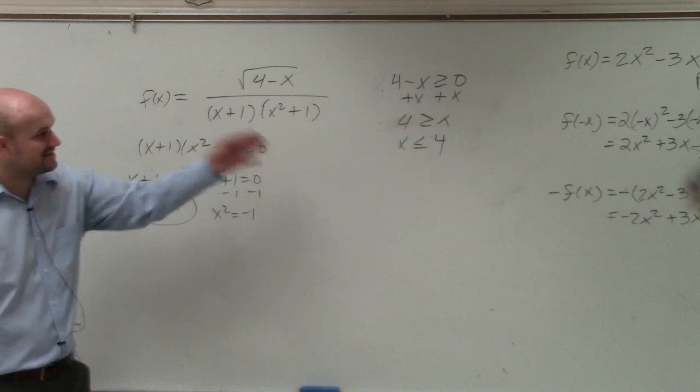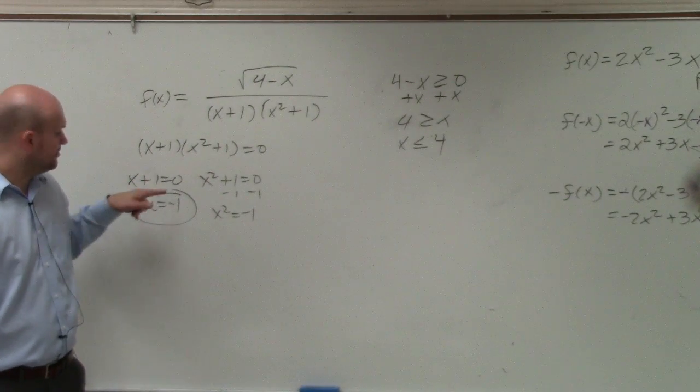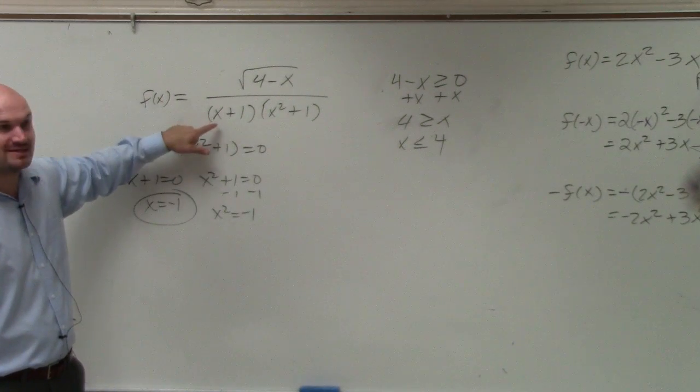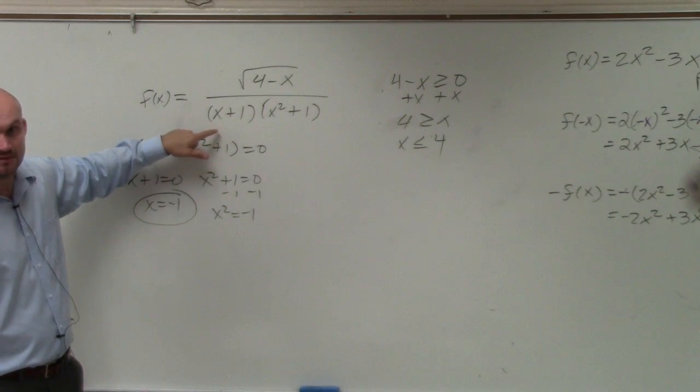So again, let's look at it. That x has to be smaller than 4, but it cannot equal negative 1, right? Because when it equals negative 1, that makes the denominator equal to zero.